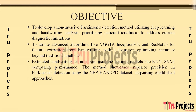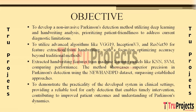The features extracted from handwriting are used to train machine learning models like K-Nearest Neighbors, Support Vector Machines, etc. The performance of these models is compared to highlight the effectiveness of the approach. The assessment is conducted using the NewHandPD dataset, validating the system's efficacy in surpassing established diagnostic methods. The system aims to demonstrate practicality in real clinical settings, enabling timely intervention and contributing to improved patient outcomes while enhancing understanding of Parkinson's disease dynamics in a real-world context.